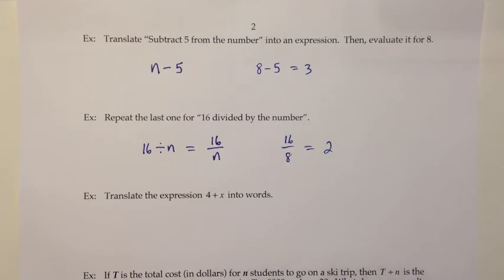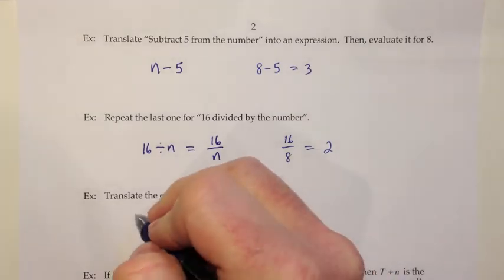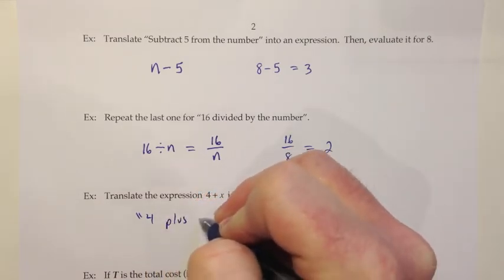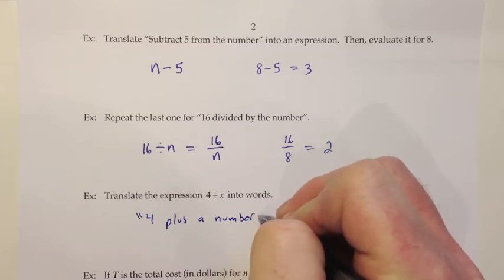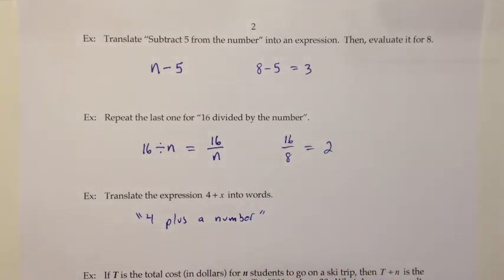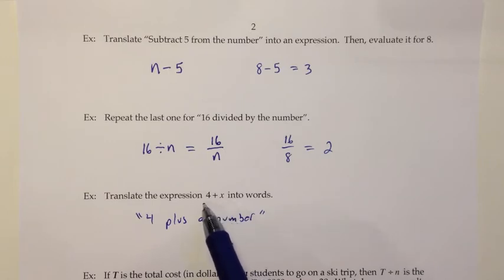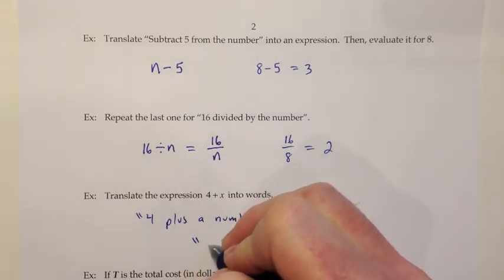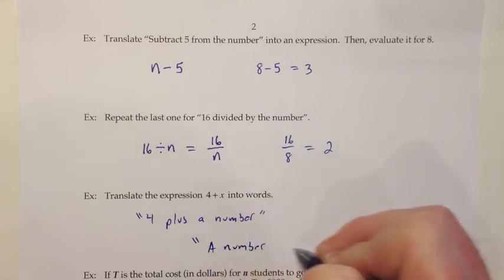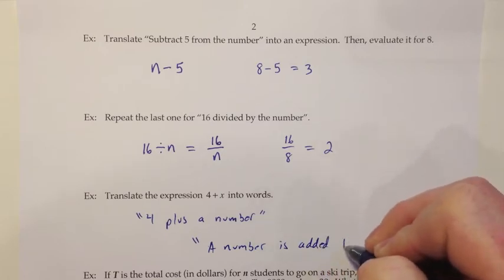Going the opposite way on this next one, they want us to translate the expression 4 plus x into words. I would take that x and say for that I'm going to say the phrase the number. So one possible translation would just be as I read it, but substituting the number here, so 4 plus a number. I think that's perfectly acceptable. But if we wanted it to be more consistent with this first example up here, then we might say that the number was added to 4. A number is added to 4.